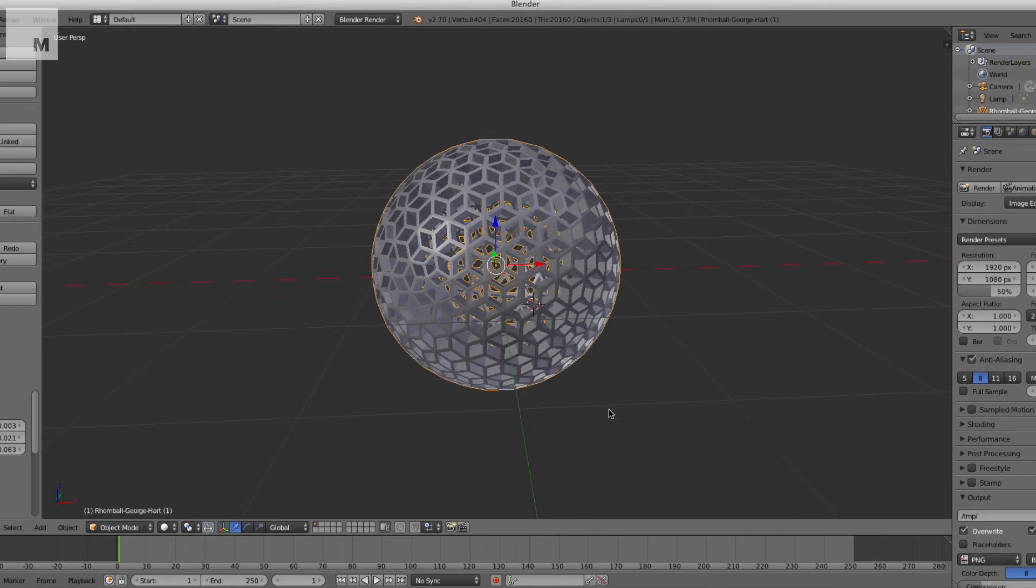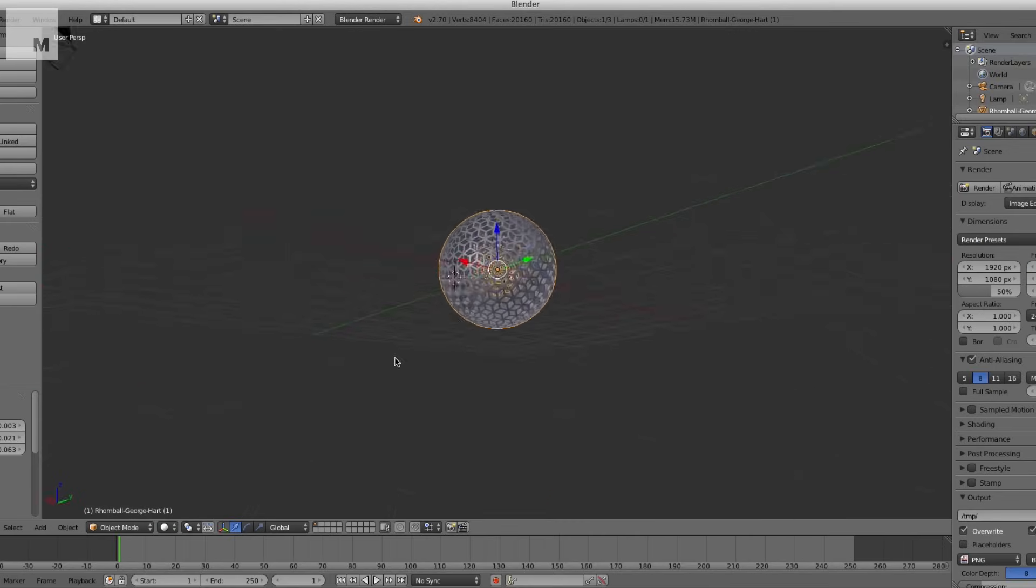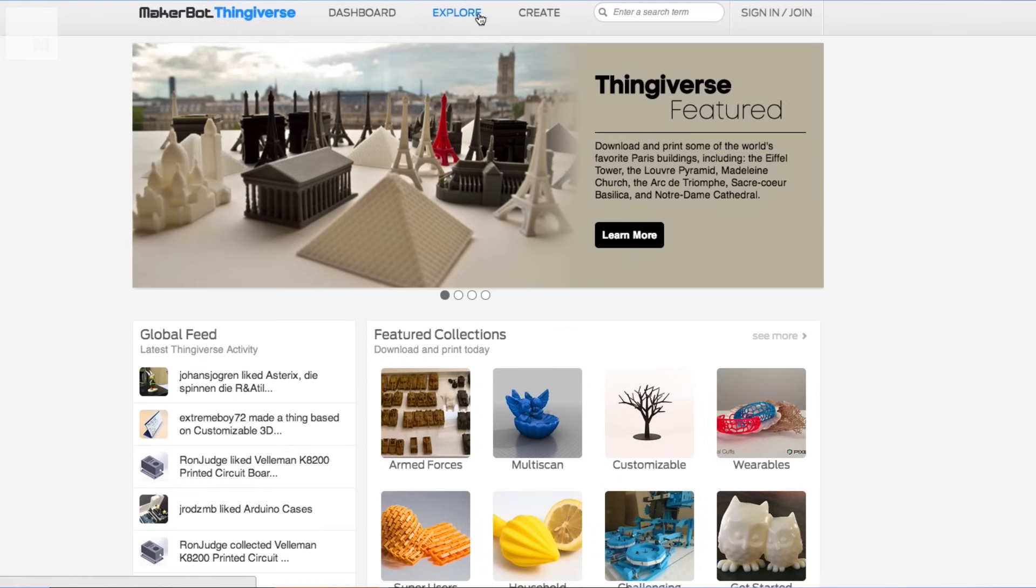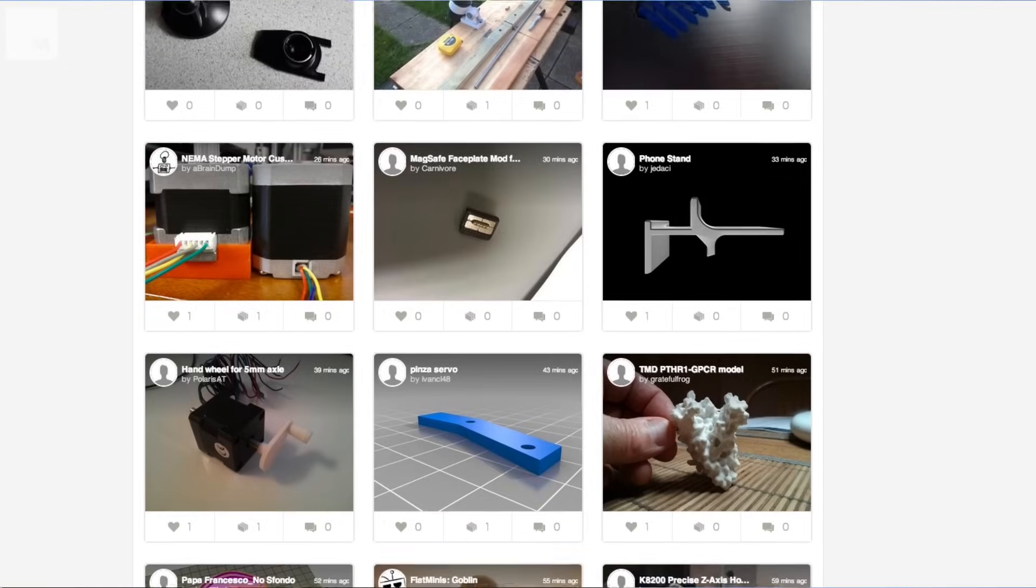The first step in 3D printing is to create a blueprint of the object you want to print. You can use modeling software like Blender to create your own designs, or you can visit websites like Thingiverse or Shapeways to find objects other users have 3D modeled. Once you have a finished design, it's time to send it to the printer.